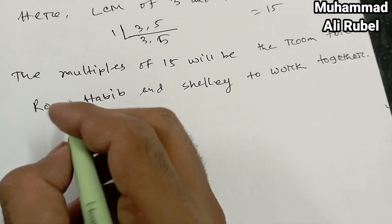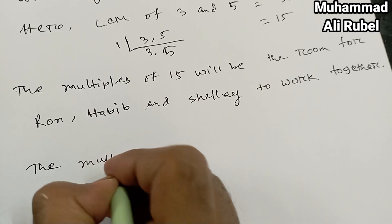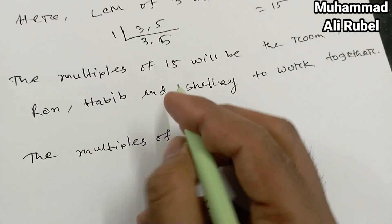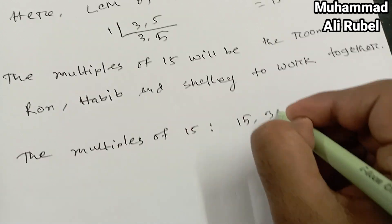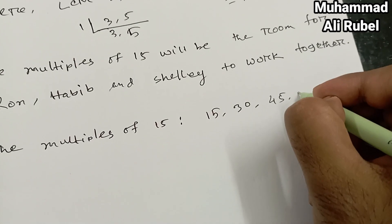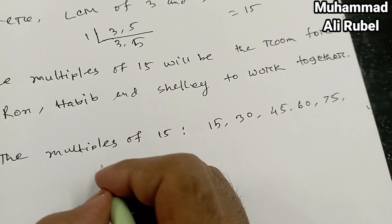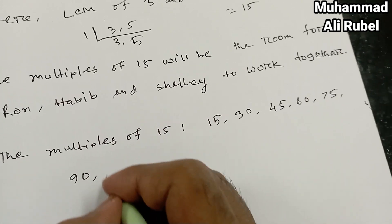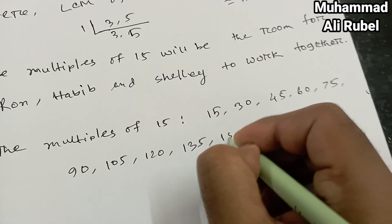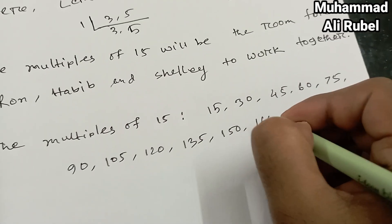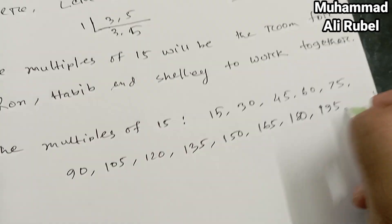The multiples of 15 within the range are: 15, 30, 45, 60, 75, 90, 105, 120, 135, 150, 165, 180, and 195. That is the answer.